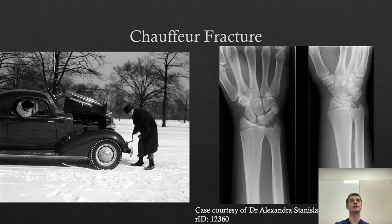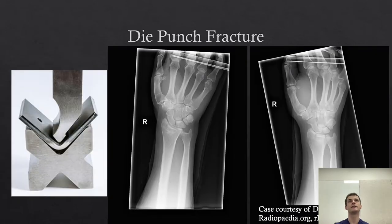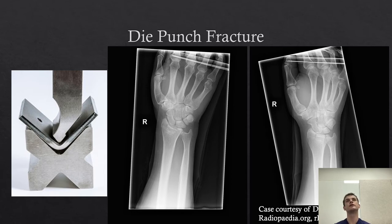Other eponymous intra-articular fractures include the chauffeur fracture, involving the styloid process. So-called because old chauffeurs used to crank the engine of very old cars manually, which would often backfire and force that crank back in a revolution and strike the back of the chauffeur's wrist, causing this particular type of fracture. Another well-named fracture is the die punch fracture. The radius takes around 80% of the axial load of the arm, and the die punch fracture results from axial load through the hand and wrist, causing the lunate to press upon the distal radius and form a small fracture in the articular surface. This is also intra-articular and often needs operative fixation.